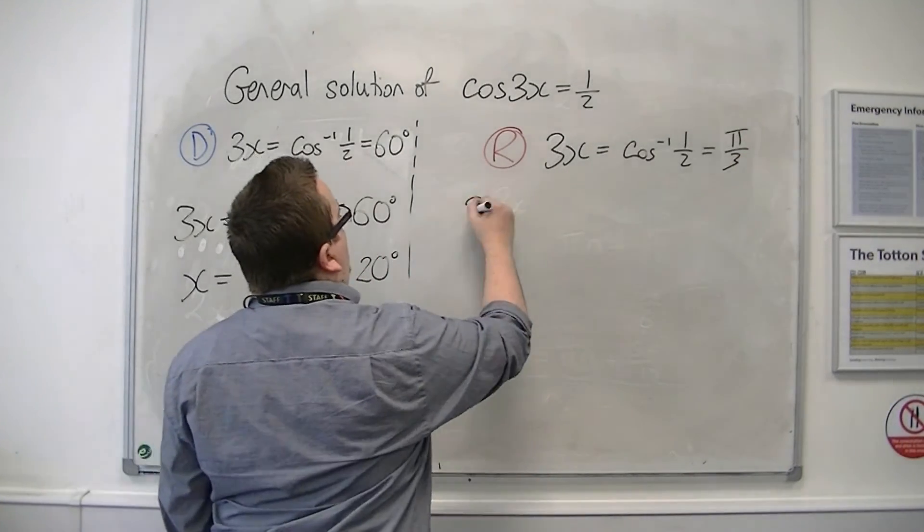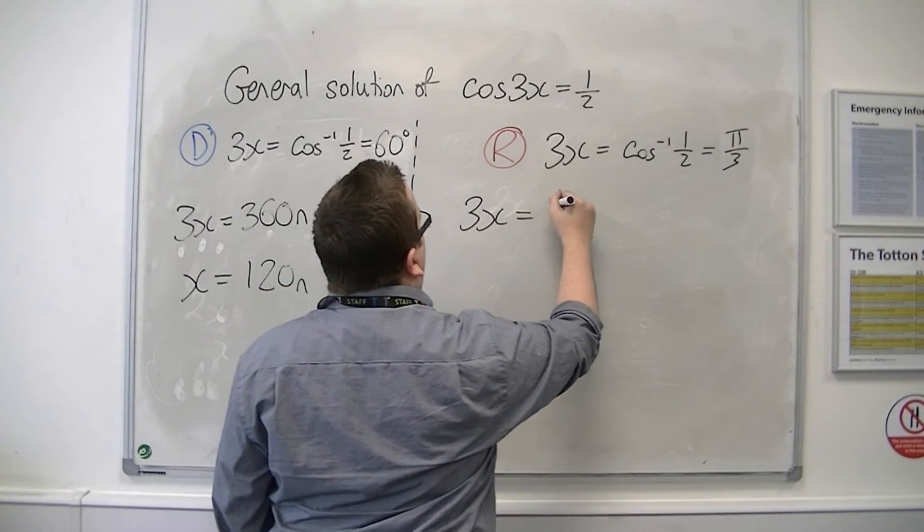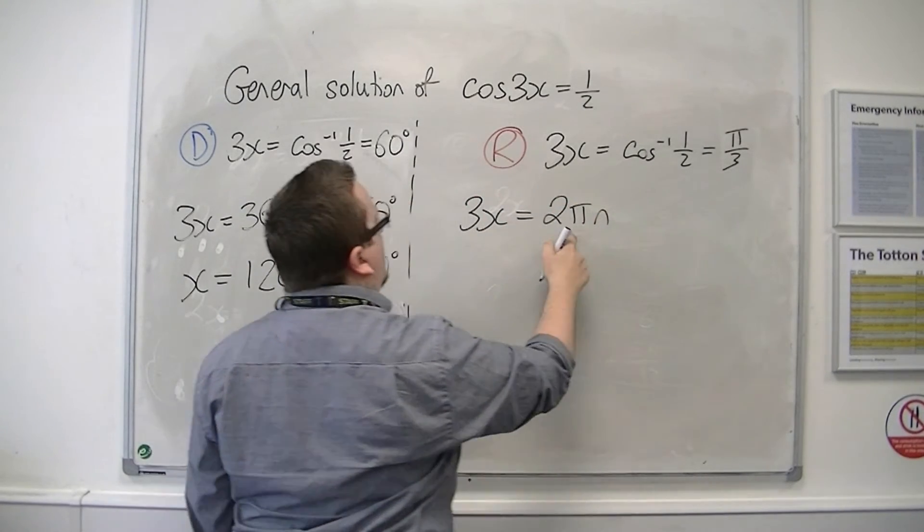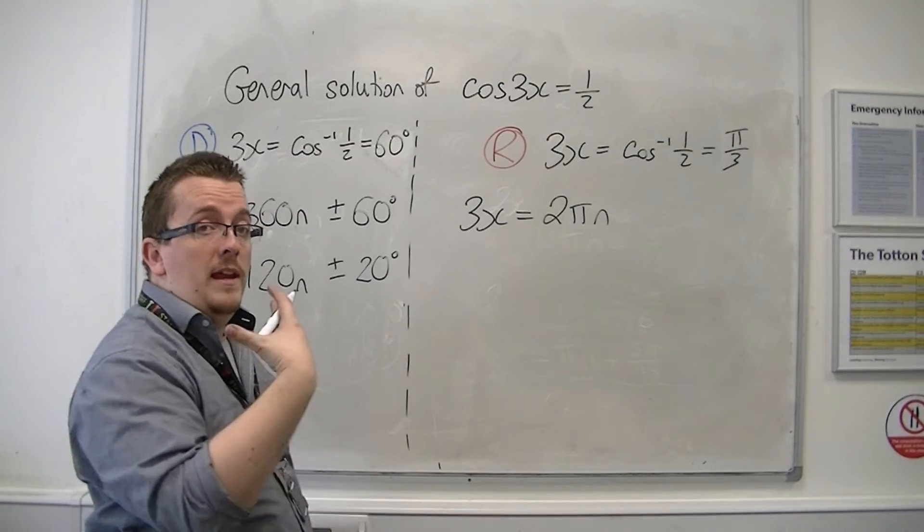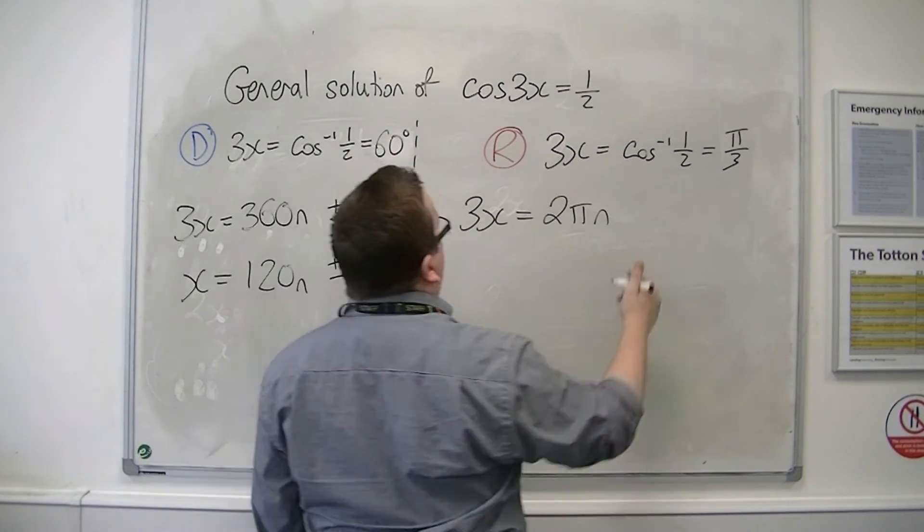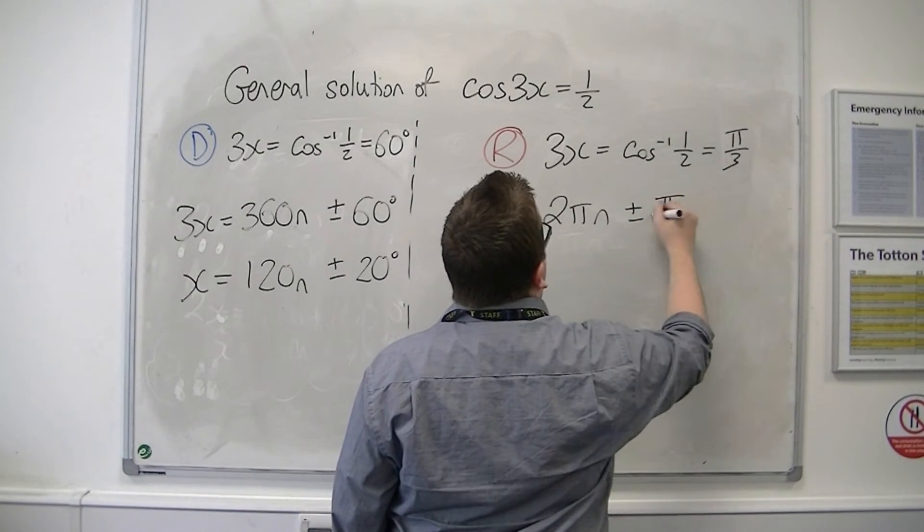So that means 3x is 2 pi n, because that's the period of cosine in radians. So 2 pi n plus or minus alpha, which is pi over 3.